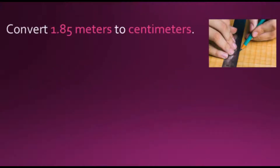In this first example, we are asked to convert 1.85 meters to centimeters. We will start by expressing the given information as a fraction, which is understood to have a denominator of 1. We will then multiply it by a conversion factor fraction that has a value of 1, and we want to cancel out meters to convert it into the desired units.